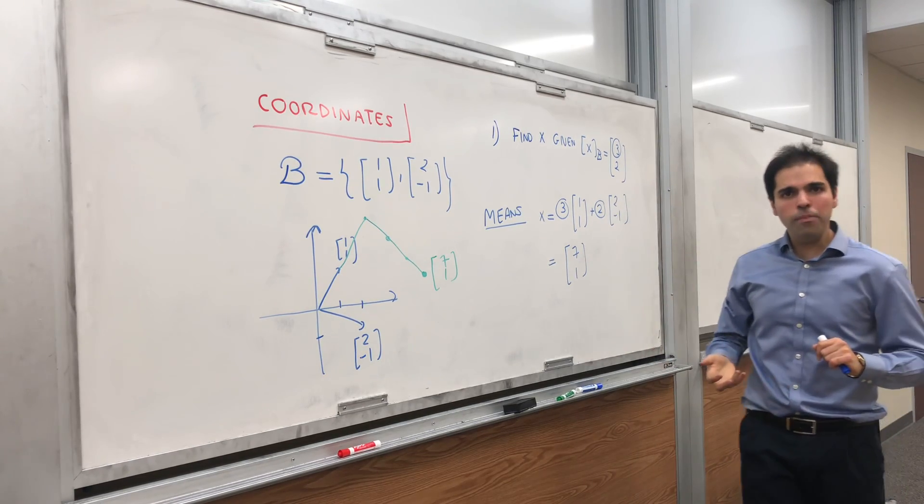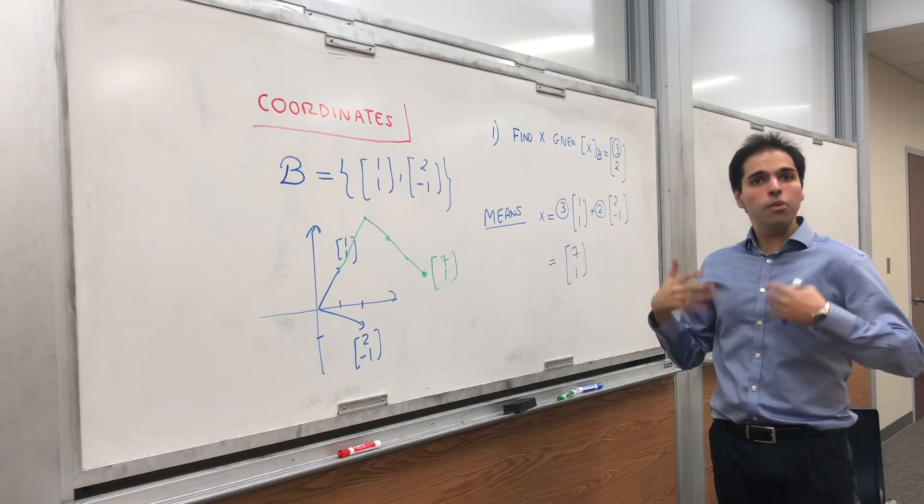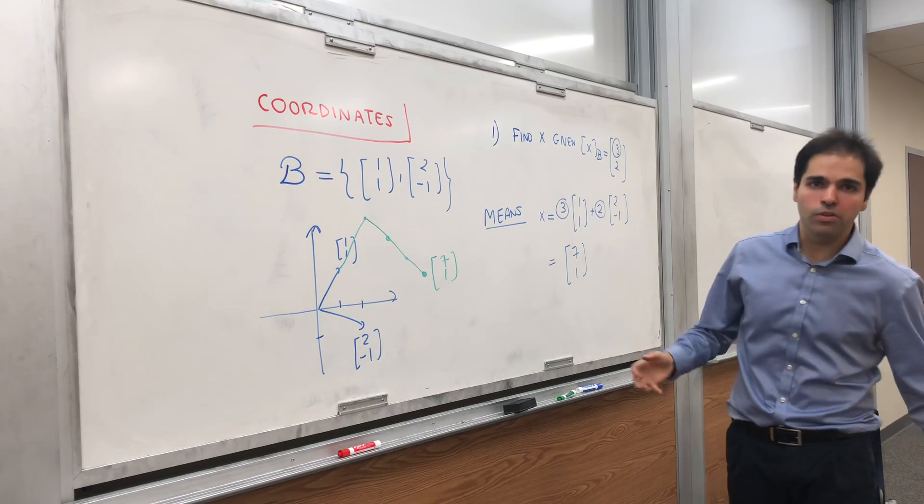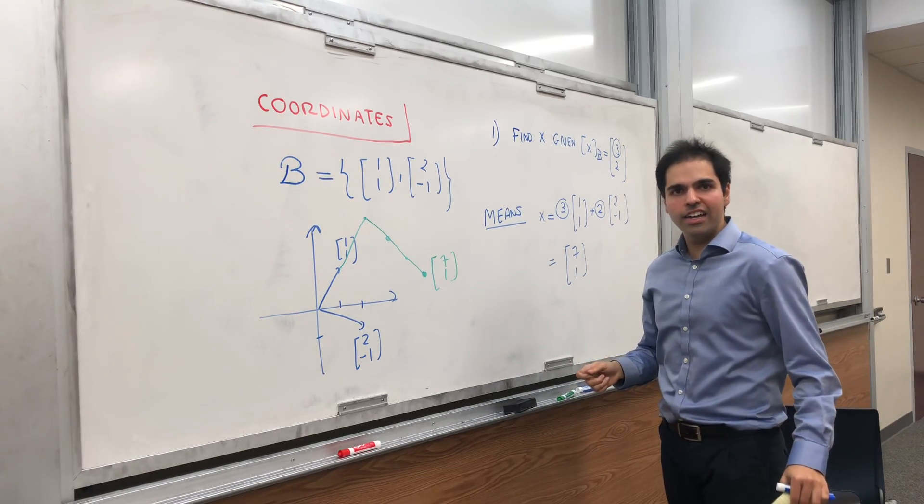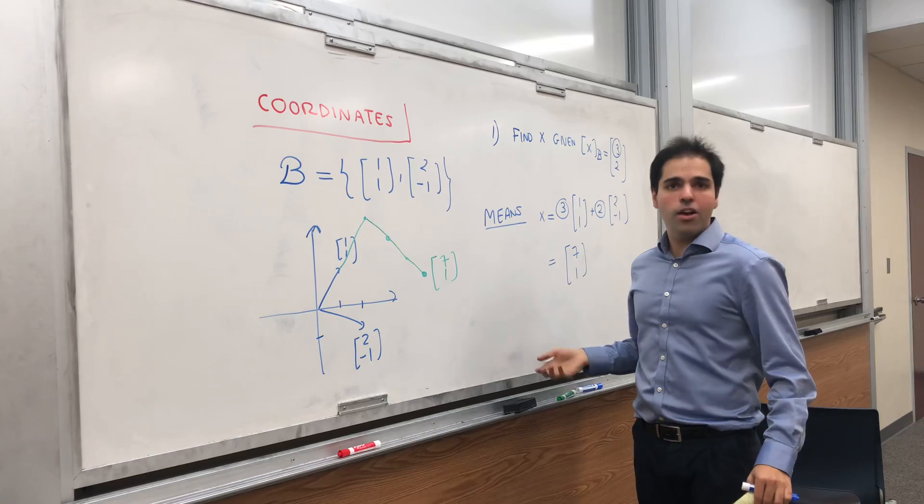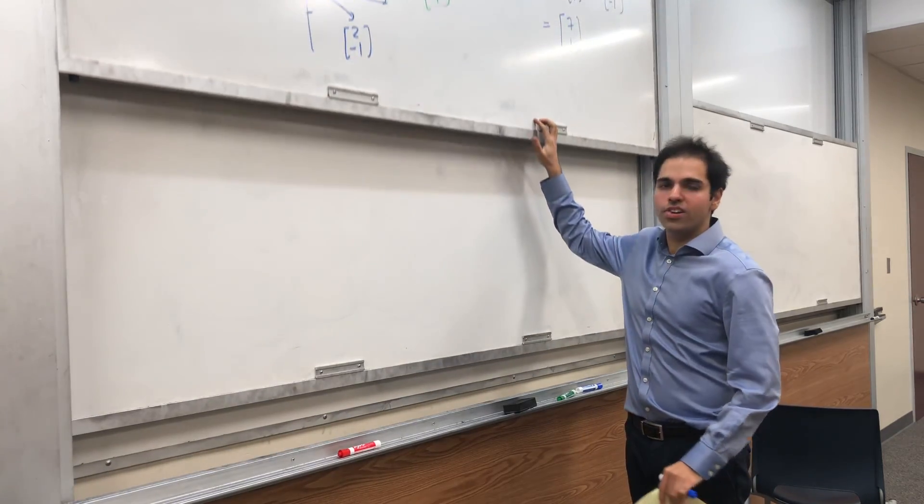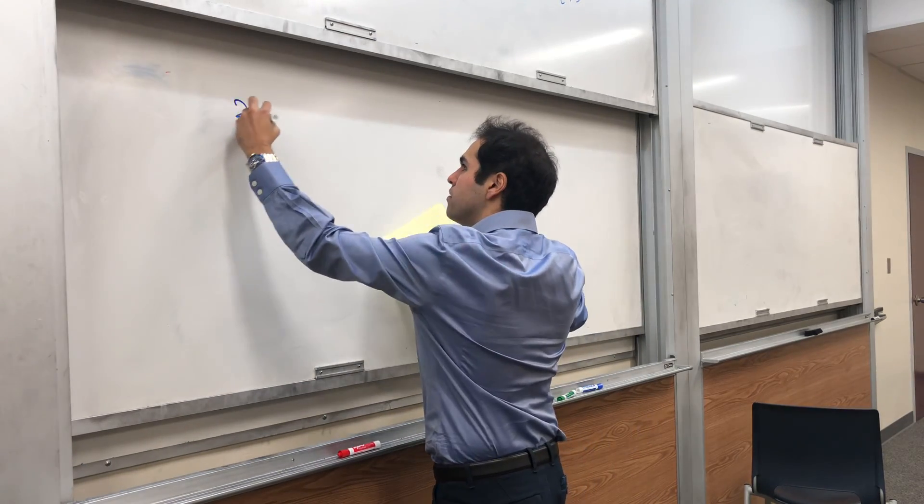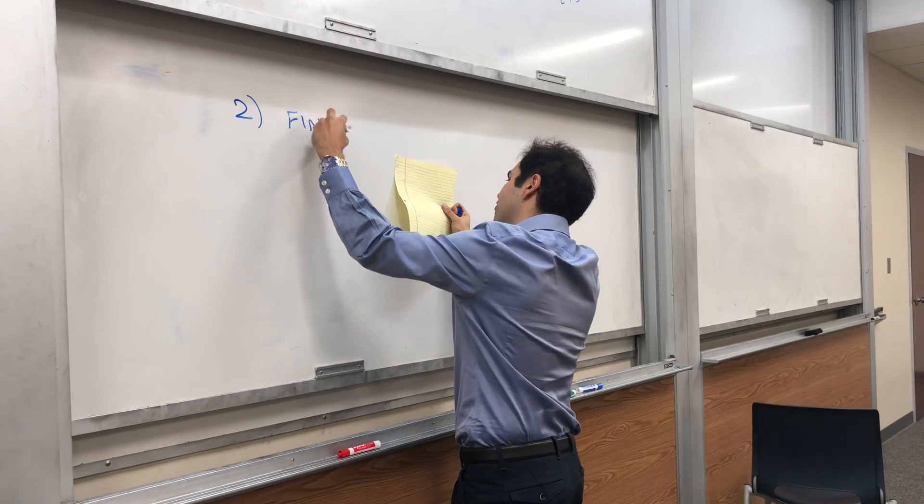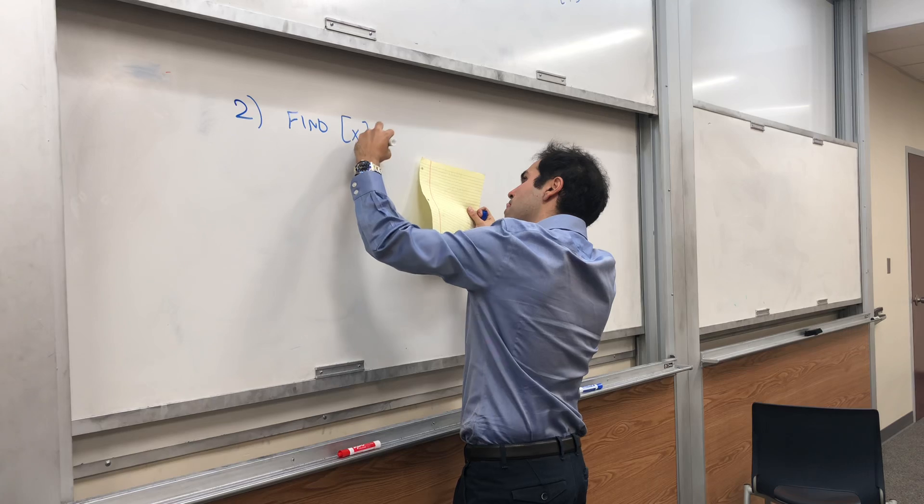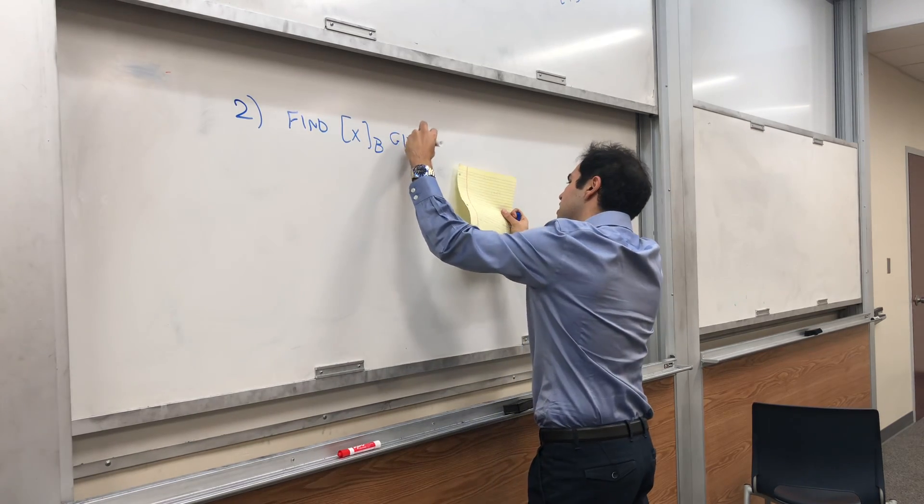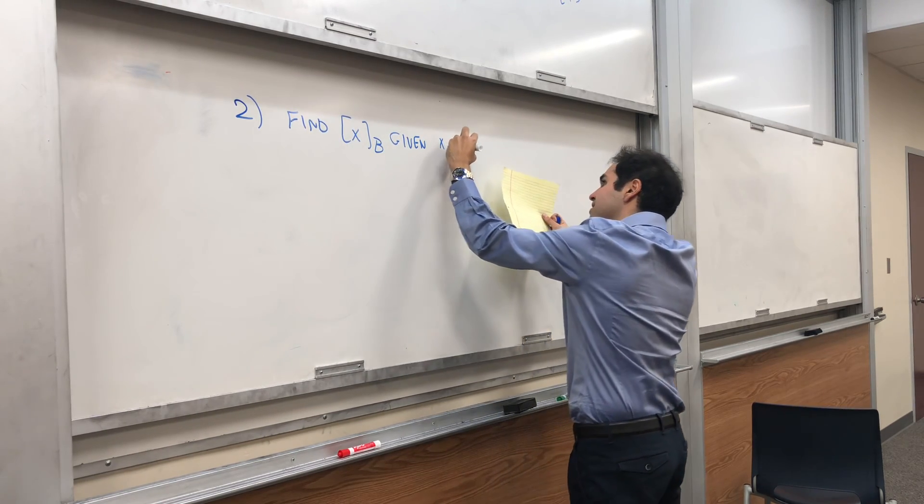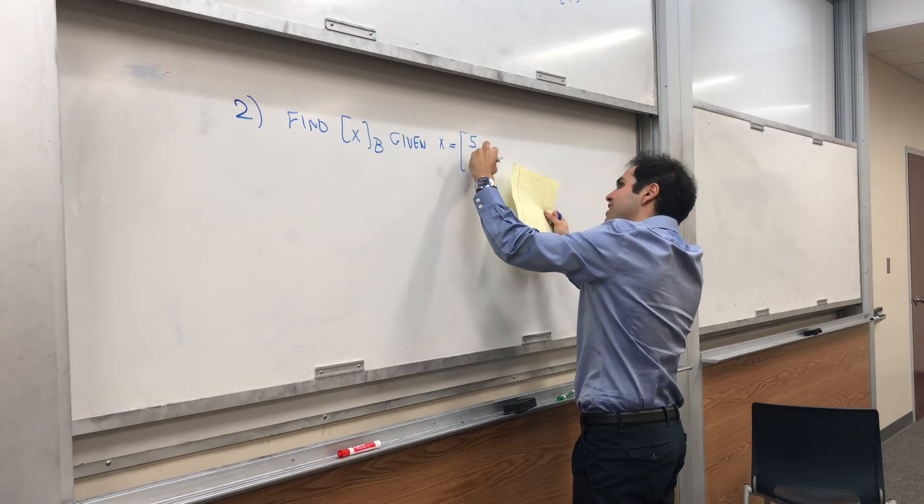Now we want to do the opposite, namely, we want to produce a certain barcode. So given this abstract item, let's make a barcode for this. And you'll see it's slightly harder to do, but yet not impossible. So find, now find xB given x is (5,-1).